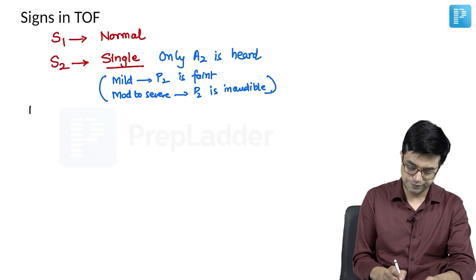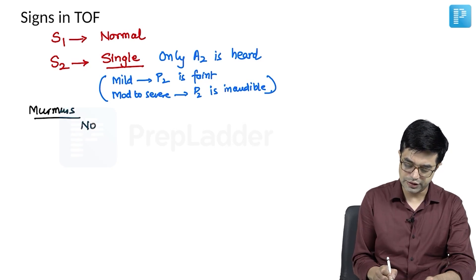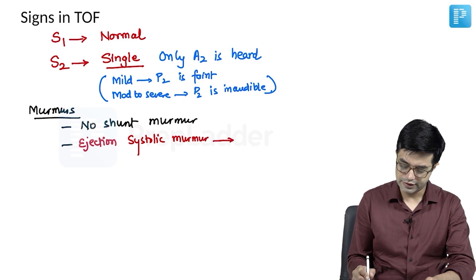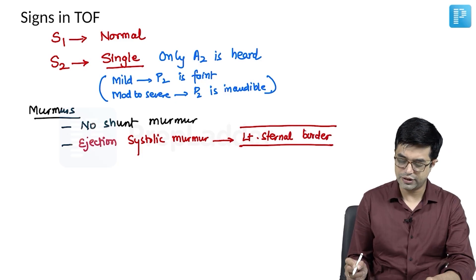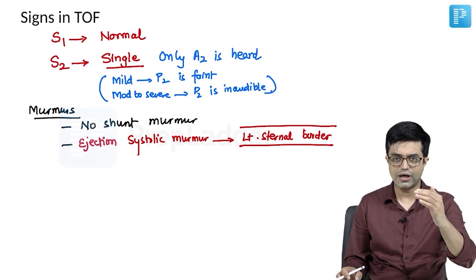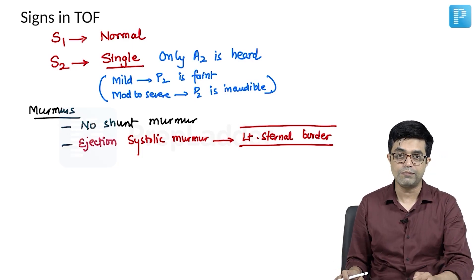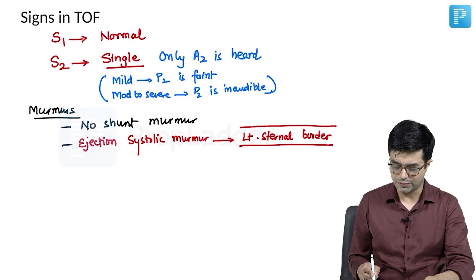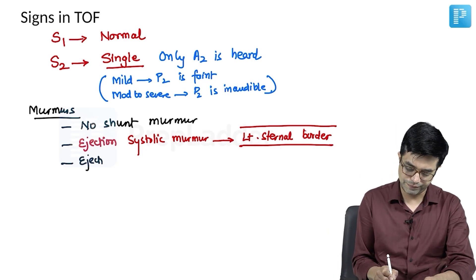Talking about murmurs in Tetralogy of Fallot: there is no shunt murmur. The murmur heard is an ejection systolic murmur, usually heard across the left sternal border. In infundibular stenosis it is heard on the lower aspects of the sternal border, whereas in purely valvular stenosis it is slightly higher placed — though on auscultation all we hear is ejection systolic murmur. Some patients may have ejection clicks, but they are variable and may or may not be present.